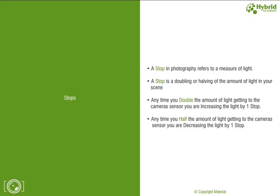Let's quickly revise what we have learned about stops in the last lesson. Every single increment or decrement on the light meter is considered to be one stop. This indicates exactly how many stops we are away from a balanced exposure. With this knowledge we can quickly make accurate adjustments to camera settings to find balanced exposure. One stop increment means we are doubling the amount of light reaching the camera sensor, and each stop decrement means we are reducing it by half.